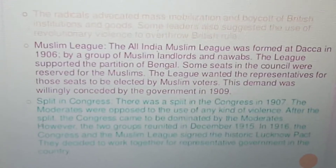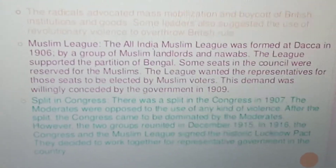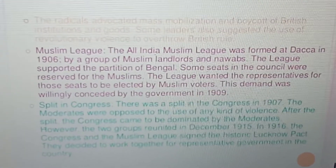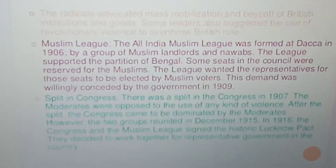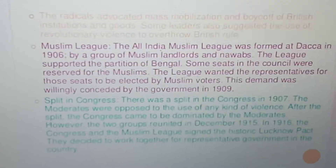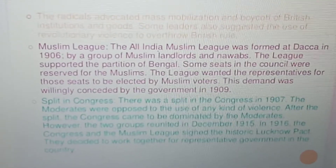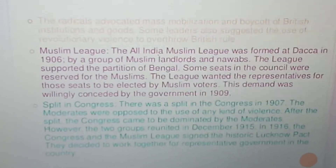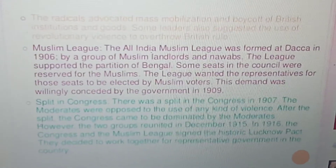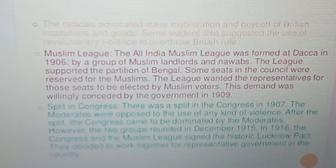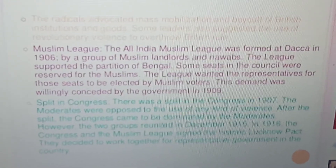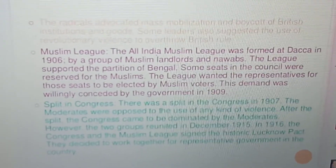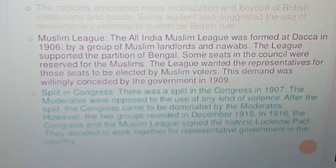People openly boycotted English goods. The radicals advocated mass mobilization and boycott of British institutions and goods. Some leaders also suggested the use of revolutionary violence to overthrow British rule. The Swadeshi movement spread nationalistic sentiments among the masses and gave the extremists the opportunity to lead the nationalist movement. The government arrested leaders and spread a ring of terror to suppress the anti-partition movement, but failed. At last, in 1911, the British government had to repeal the partition of Bengal.